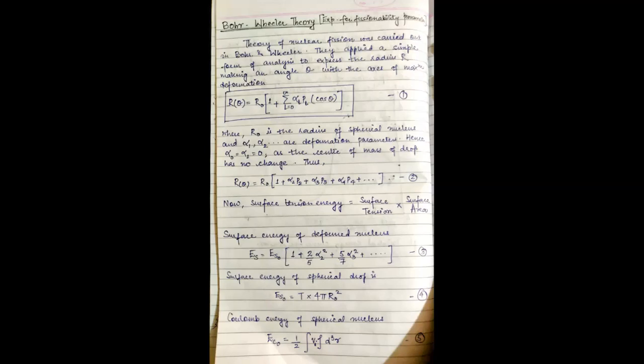The drop is deformed from the spherical shape in such a way that it retains an axis of symmetry. The polar axis of the spherical coordinates are theta and phi. The theory of nuclear fission was carried out and the two scientists, Bohr and Wheeler,